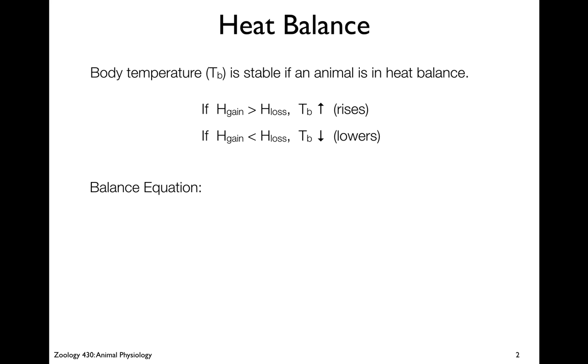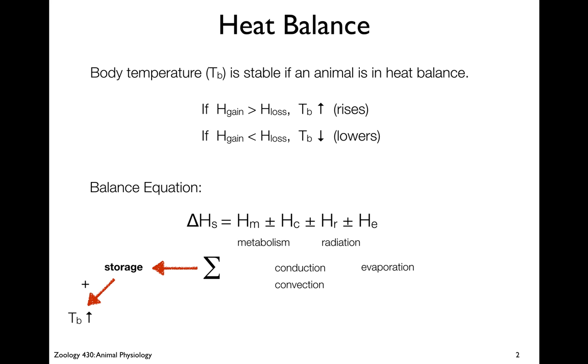You can figure out what's going on using the balance equation where the biggest input is usually the heat of metabolism from your metabolic rate. You can lose heat through conduction and convection, and for rough calculations we'll keep them combined. Animals typically gain heat through radiation and lose heat through evaporation, but whether it's a gain or loss depends on specific circumstances. When you add them all together, you get a value for the heat of storage, delta HS. If delta HS is positive, your body temperature goes up; if it's negative, your body temperature goes down.